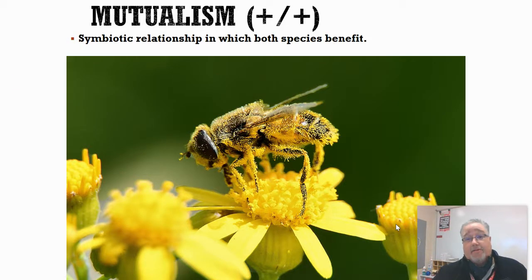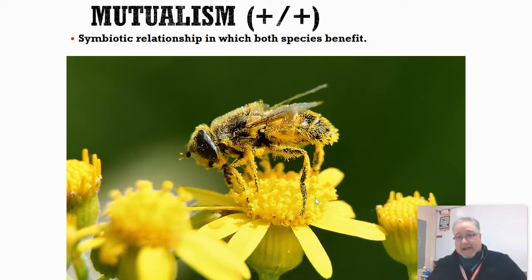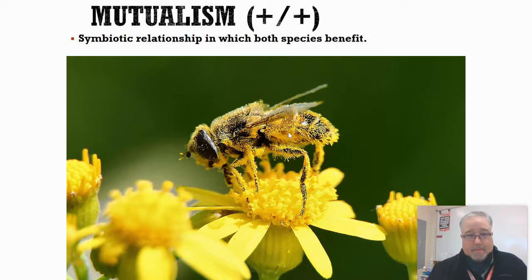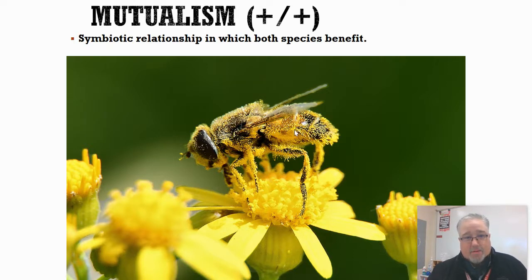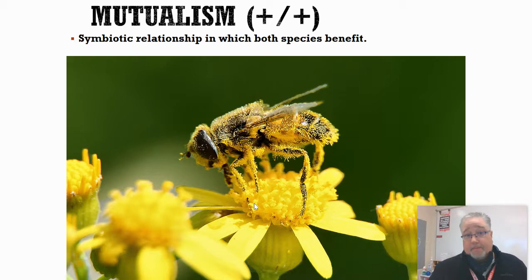Mutualism is another type of symbiosis where we've got two organisms living together, but this one is a plus-plus — both organisms benefit. Probably the most classic example of mutualism is a bumblebee and a flower. The bumblebee comes to the flower and gets nectar for food. If you notice, there are little yellow speckles on the bumblebee — those are grains of pollen. As the bumblebee goes from one flower to the next, it spreads pollen, which is how the plant reproduces. So the plant gets a way to reproduce and the bumblebee gets food — a win-win relationship.